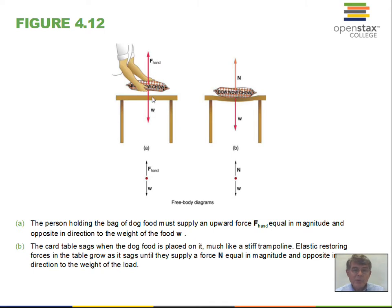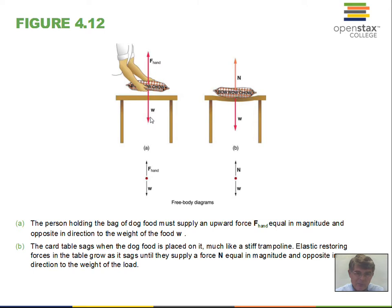A bag of dog food: a person pulling upward supplies an upward force balancing the weight of the object. Are these Newton's third law forces? No — both forces are acting on the bag. If the person's hand is pushing upward on the bag, the bag is pushing downward on the hand — that would be a third law pair, but it clutters the diagram. Also, this bag of dog food is pulling up on the Earth with the same number of newtons — if it's a 50-newton bag, gravity pulls it down and the dog food pulls up on the Earth with 50 newtons.